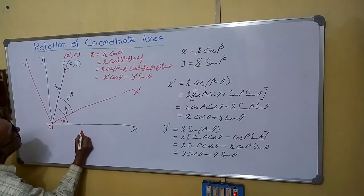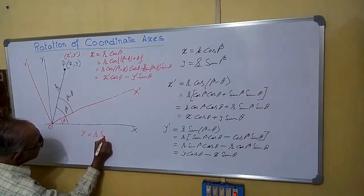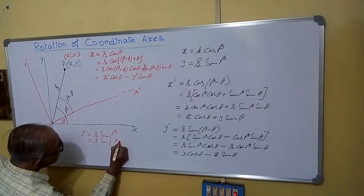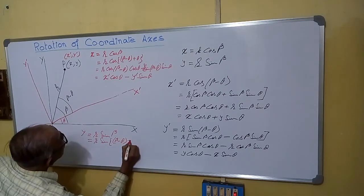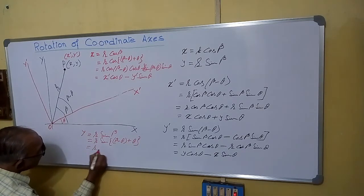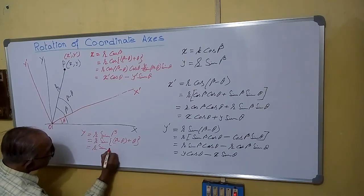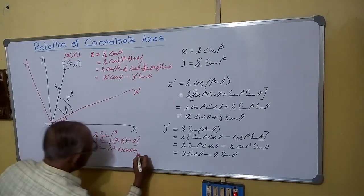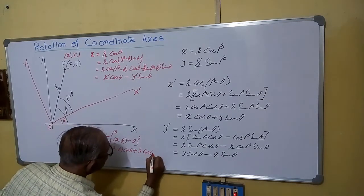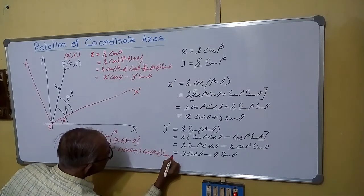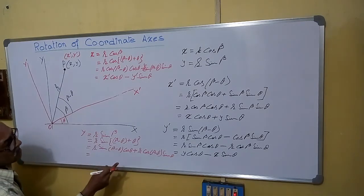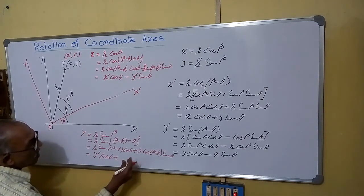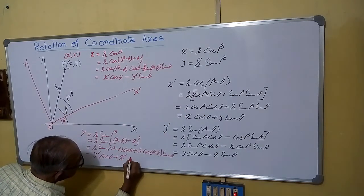Similarly, proceeding for y: y equals r sin(beta), and we can write beta as (beta minus theta) plus theta. Expanding sin(A plus B): this equals r sin(beta minus theta)cos(theta) plus r cos(beta minus theta)sin(theta). Now r sin(beta minus theta) is y-dash and r cos(beta minus theta) is x-dash. So y equals y-dash cos(theta) plus x-dash sin(theta).